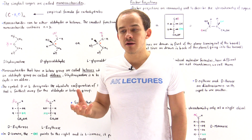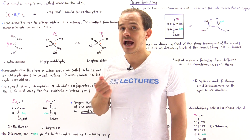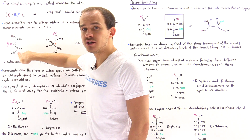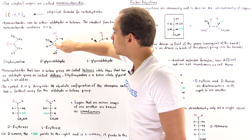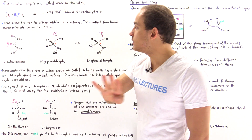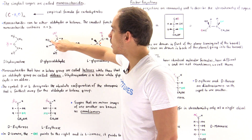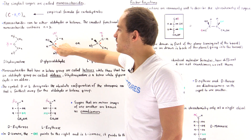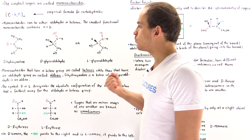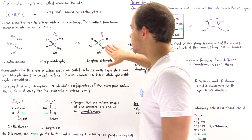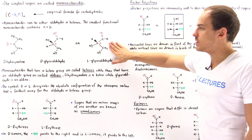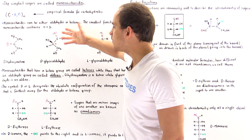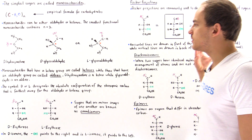A stereogenic carbon is a chiral carbon attached to four different groups. In the aldose molecule, one carbon has four different groups: the hydroxyl, the H atom, and two distinct carbon-containing groups — so an enantiomer exists. D-glyceraldehyde and L-glyceraldehyde are these two enantiomers. D simply means one enantiomer and L means the other type, and we'll see exactly what D and L represent in just a moment.